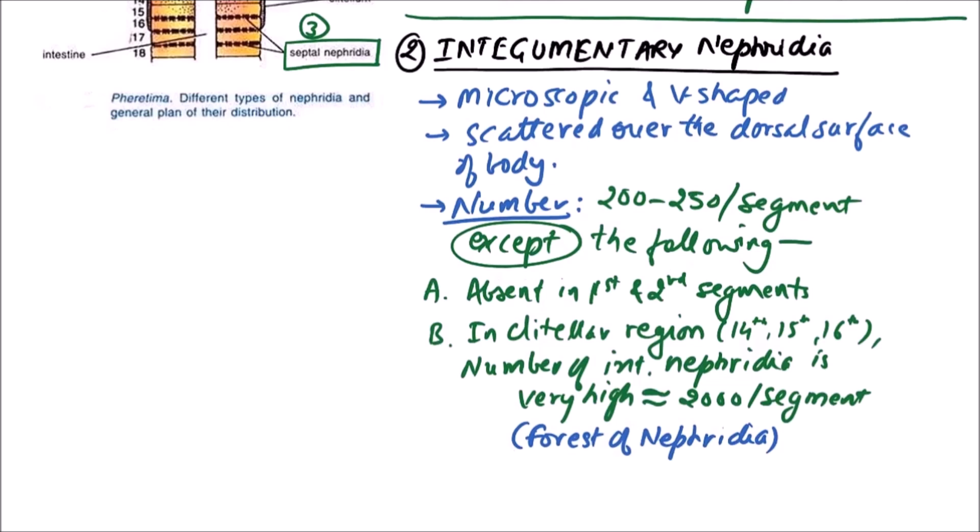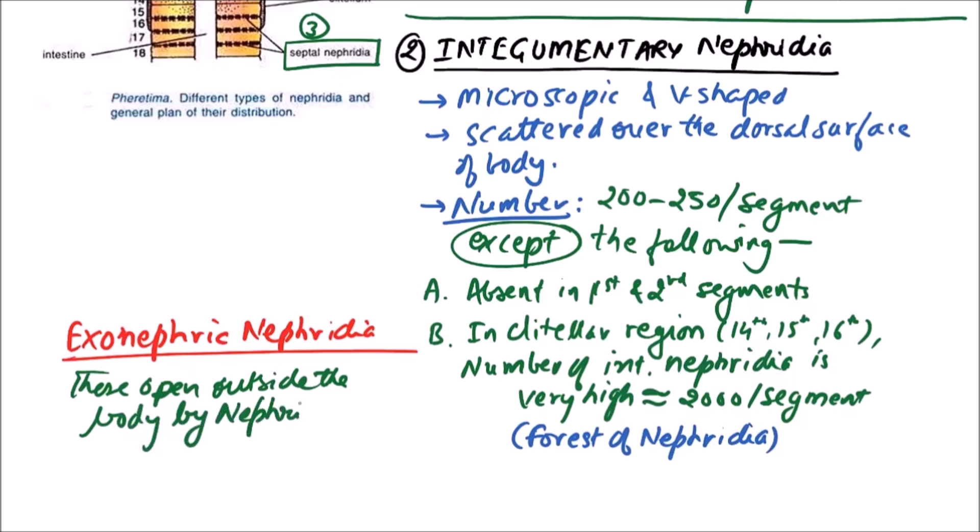Now important thing is that these are exonephric nephridia. Because these are opening outside the body and these open outside the body by nephridial pores. Important thing is that nephrostome is absent. So this is the integumentary nephridia.